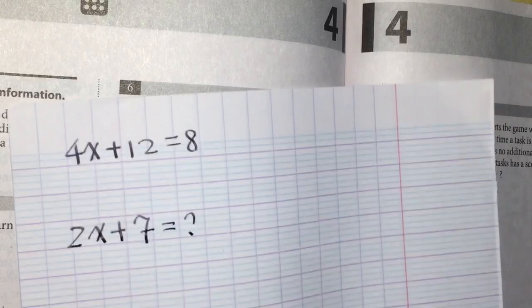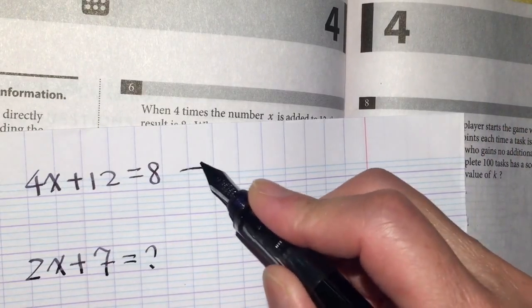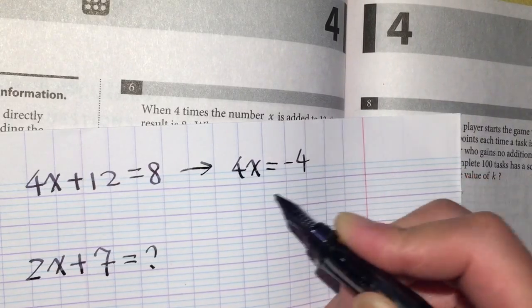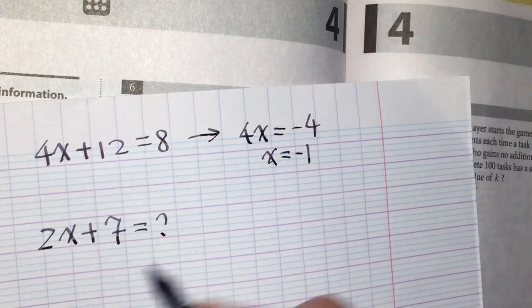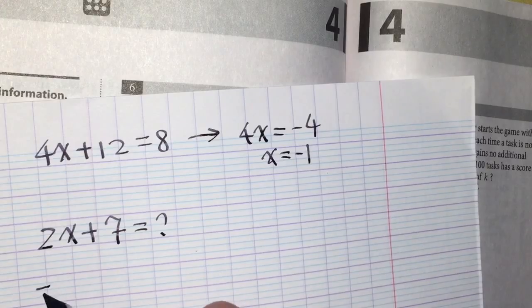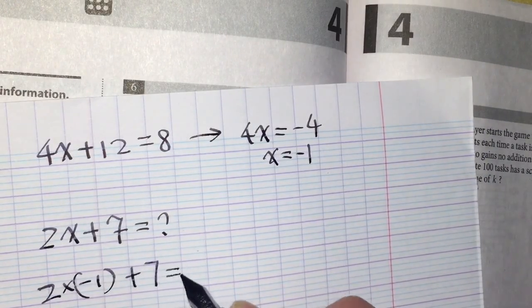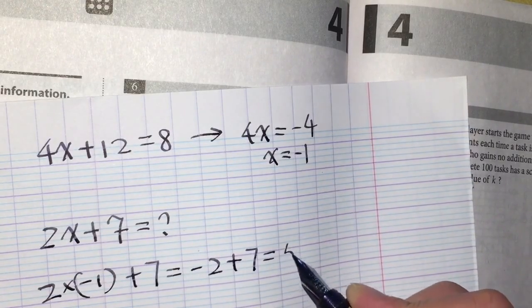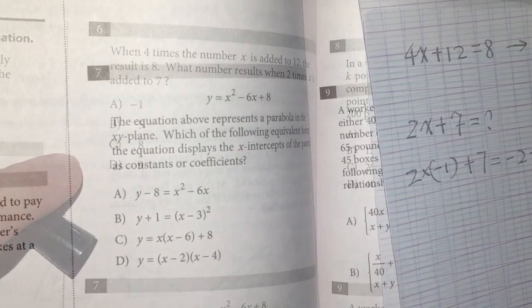To solve this problem, first get to know what is x. 4x plus 12 equals 8, so 4x equals negative 4, x equals negative 1. Plug this x in. Negative 2 times negative 1 plus 7 equals negative 2 plus 7 equals positive 5. So the answer is 5. The answer is b.